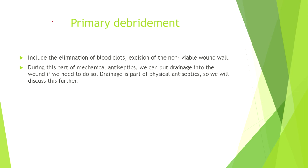The next step of mechanical antisepsis is primary debridement. Primary debridement includes elimination of blood clots and excision of the non-viable wound wall. During this part of mechanical antiseptics, we can put a drain into the wound if needed. Drainage is part of physical antiseptics, which we will discuss further.